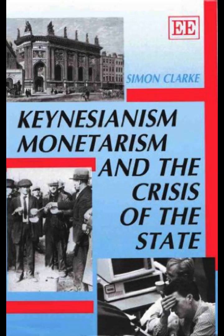The budget was accompanied by the first white paper on national income and expenditure, which integrated the accounts of the public and private sector to estimate the 'inflationary gap' that had to be covered by increases in taxation. The adoption of Keynesian budgetary principles led to an influx of economists and statisticians into the Treasury, not to take over the role of economic planning, but to develop a more sophisticated system of national accounting on the basis of which to determine budgetary policy.